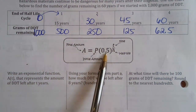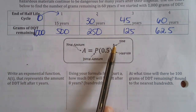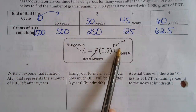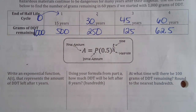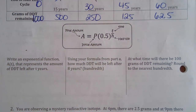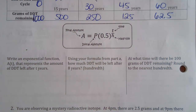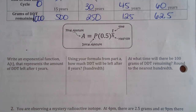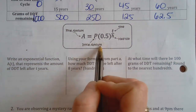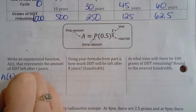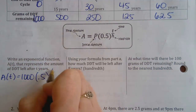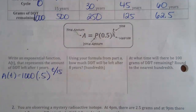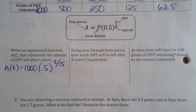Here's the half-life formula: same letters a and p, base is 0.5, and the exponent is time divided by the number of half-lives. If it helps you remember, think 'Tim Hortons' — T over H. Write an exponential function for the amount of DDT left after T years: we started with 1,000 grams, base 0.5, exponent is T over 15 (the half-life).